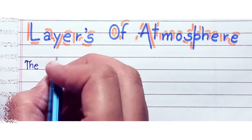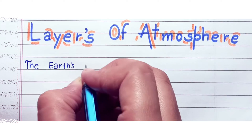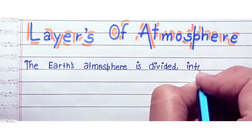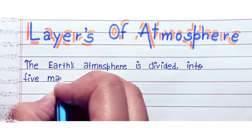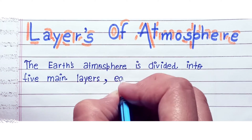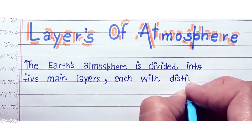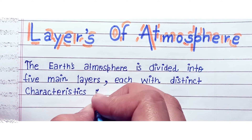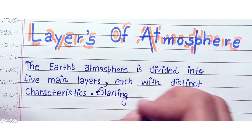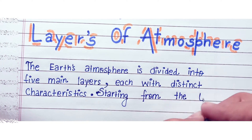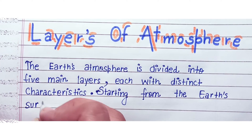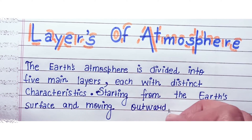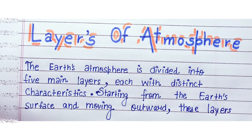Hello everyone, welcome back to our channel. Today's topic is layers of atmosphere, so let's get started. The Earth's atmosphere is divided into five main layers, each with distinct characteristics. Starting from the Earth's surface and moving outward, these layers are: